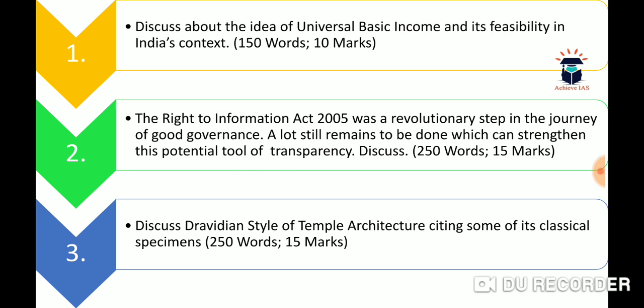The second question is: the Right to Information Act 2005 was a revolutionary step in the journey of good governance, but a lot still remains to be done to strengthen this potential tool of transparency — discuss. The RTI Act 2005 empowered people to get information from government authorities, enhancing transparency and accountability. However, there are many limitations in the act as it stands in its present form. You have to discuss this in 250 words for a maximum of 15 marks.